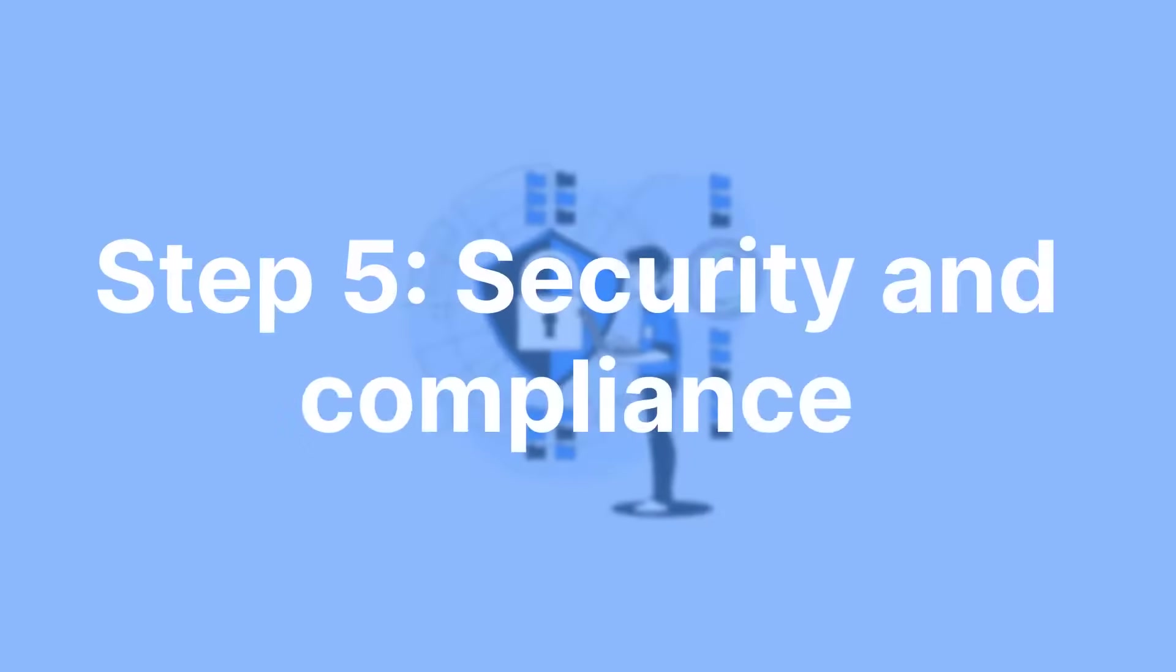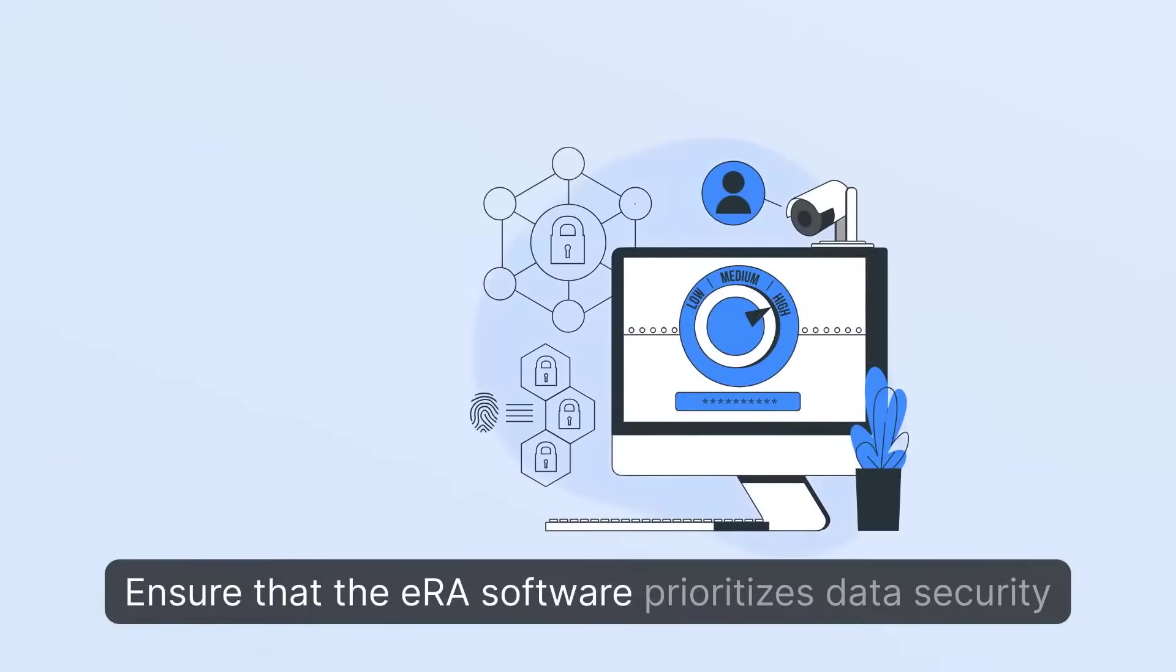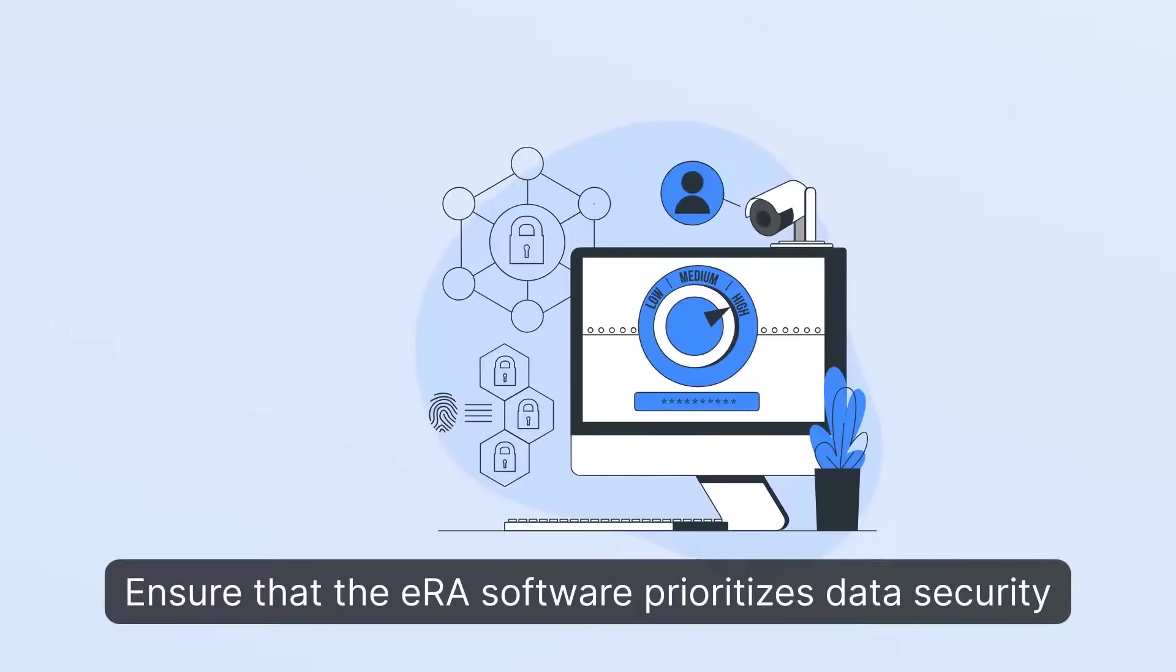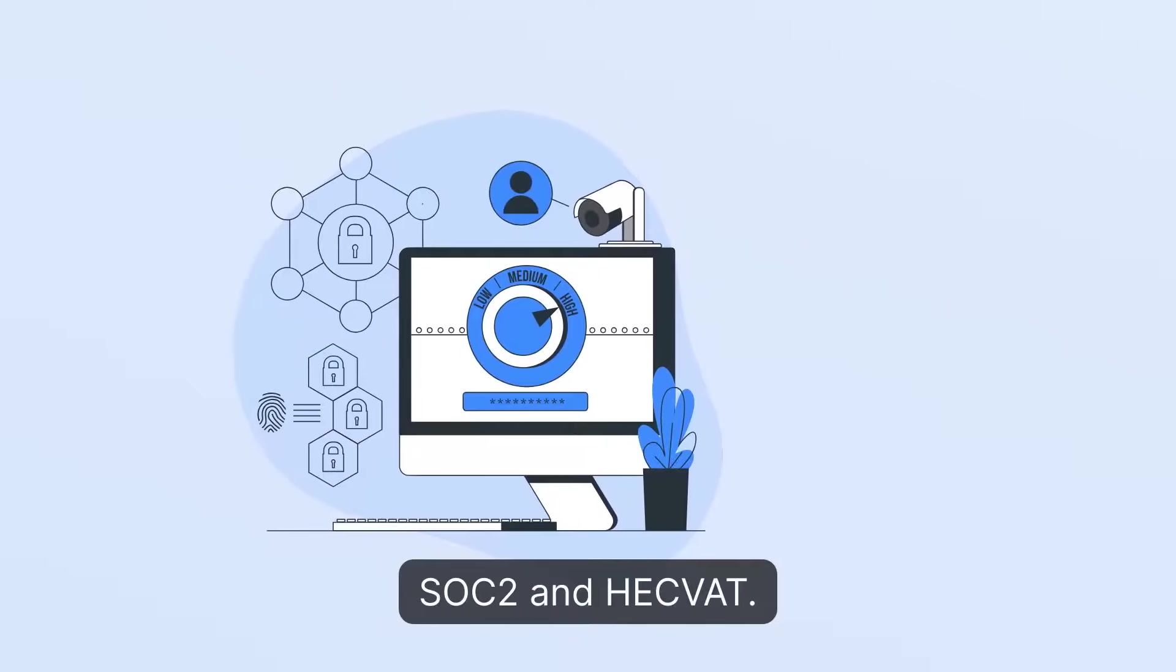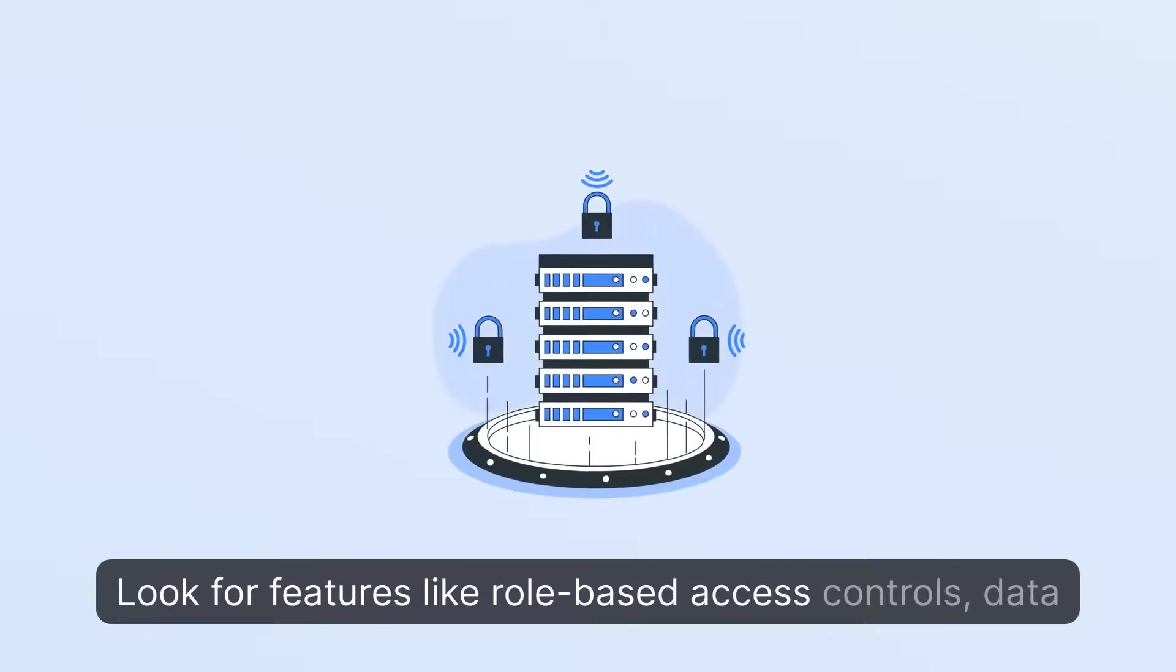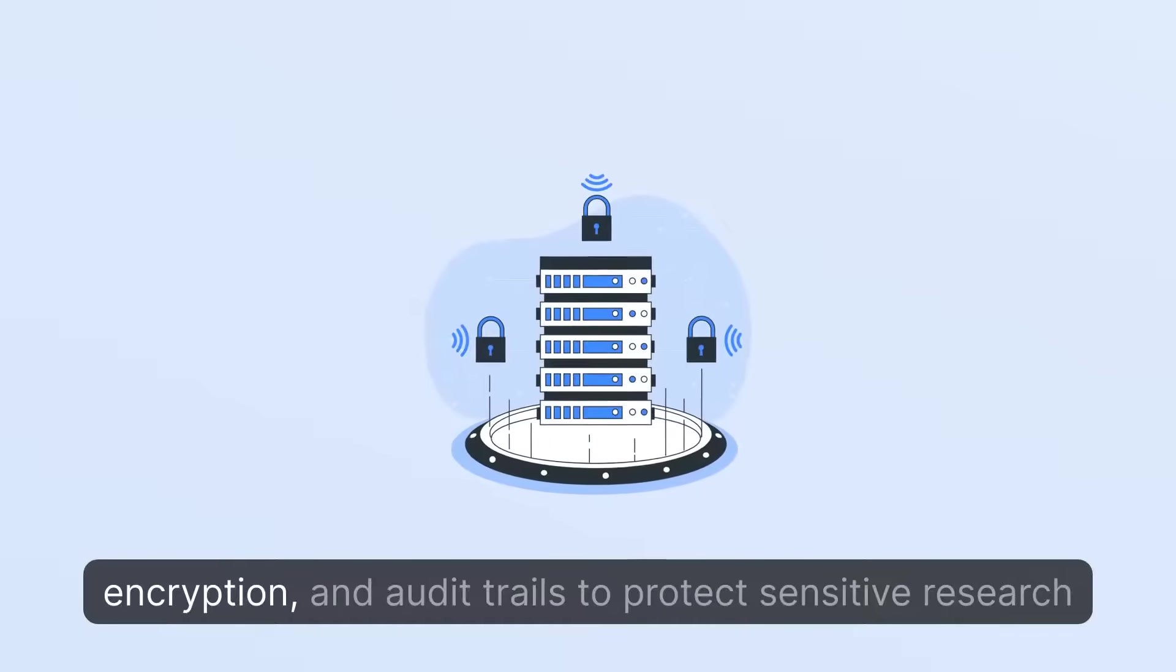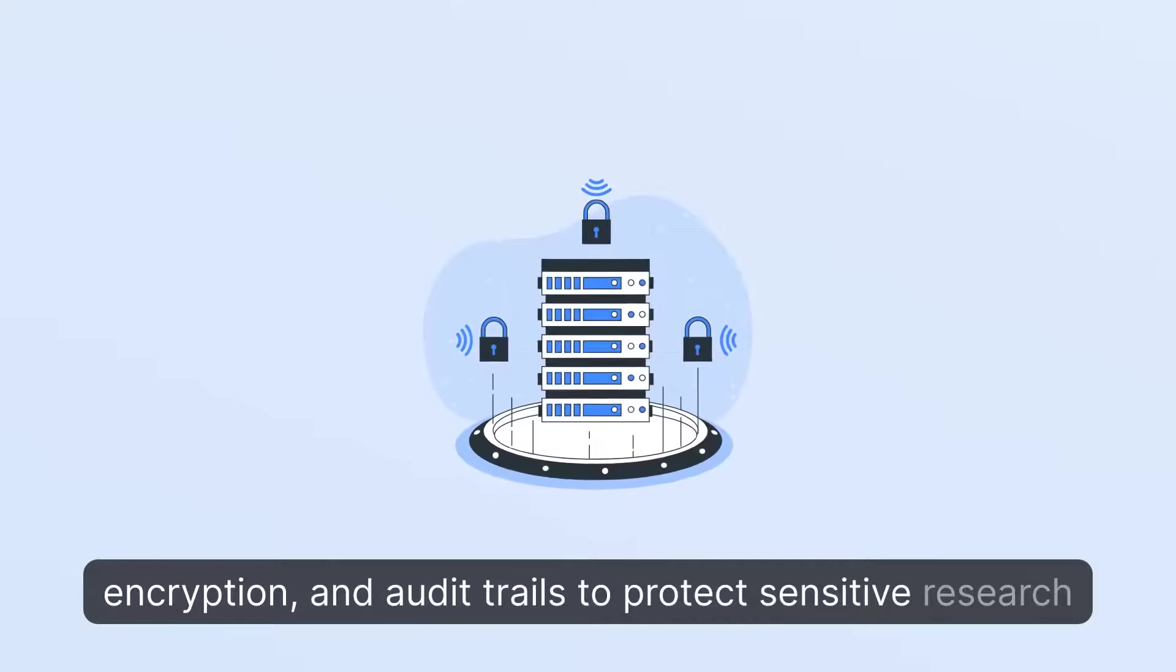Step 5. Security and Compliance. Ensure that the ERA software prioritizes data security and complies with relevant regulatory standards, such as SOC 2 and HEGVAT. Look for features like role-based access controls, data encryption, and audit trails to protect sensitive research data.